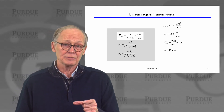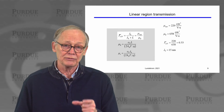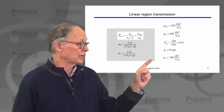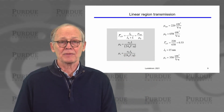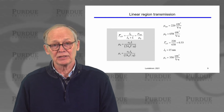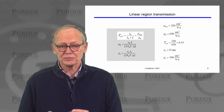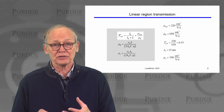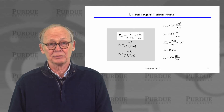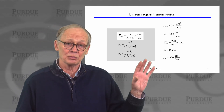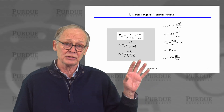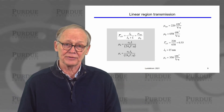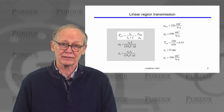So this 30 nanometer channel length MOSFET is two mean free paths long. We can use that mean free path in the expression for the scattering limited mobility and deduce that the mobility due to scattering is 350 centimeters squared per volt second. This is the mobility we would measure in a much longer channel length MOSFET in the same technology.